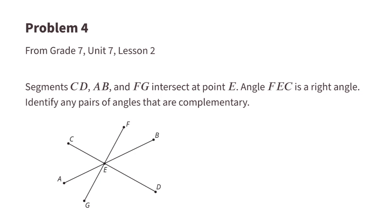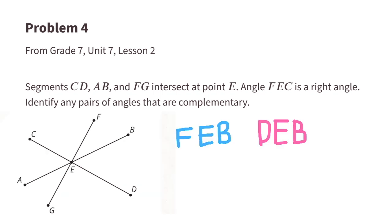Problem number four, from seventh grade unit 7 lesson 2: segments CD, AB, and FG intersect at point E. Angle FEC is a right angle. Identify any pairs of angles that are complementary. Angles FEB and DEB are complementary because the sum of all their angles is 90 degrees, which forms a right angle.